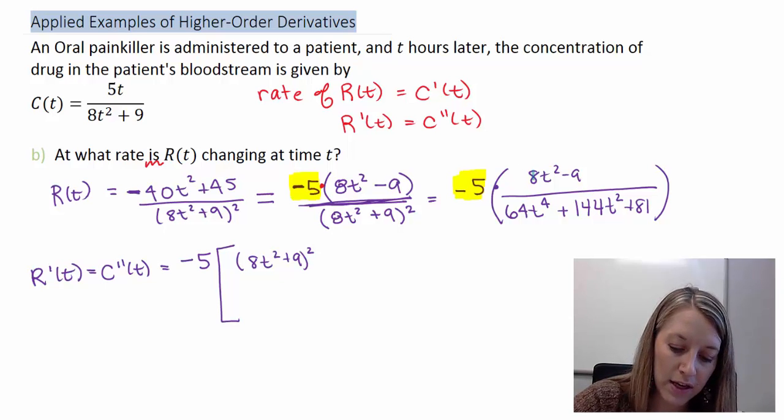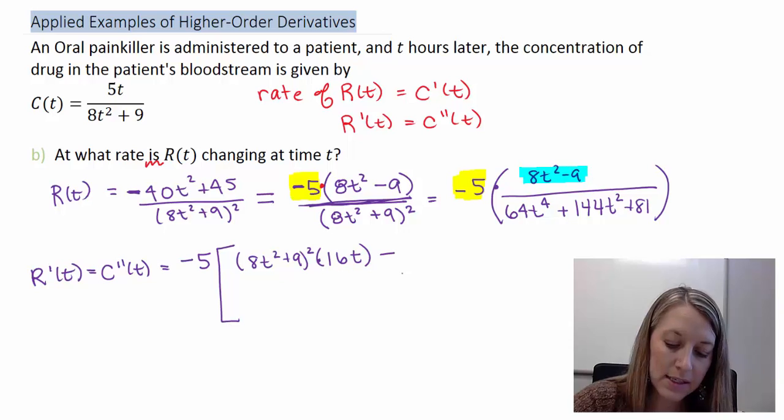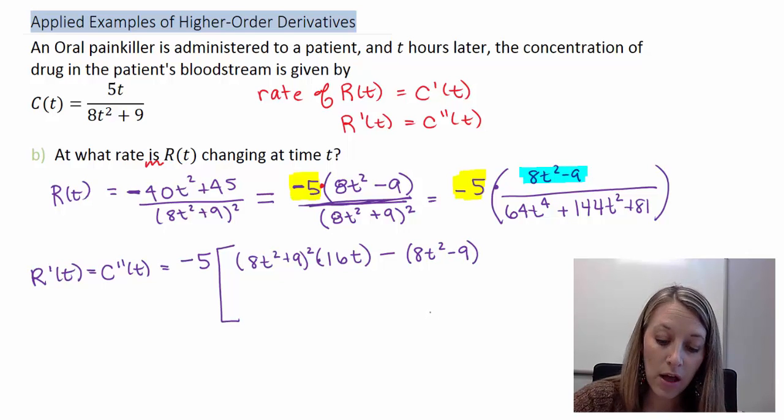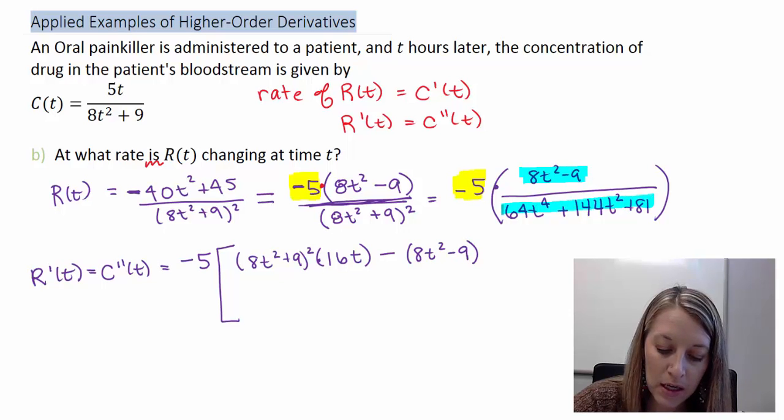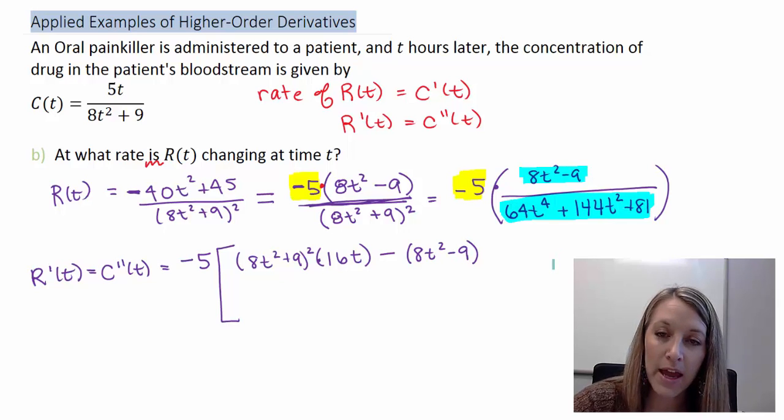So I'm going to take the derivative of this here, my expanded format. And so the derivative of that gives me a 16t minus high D low. So let me keep my high as is, 8t² - 9, D low. So the derivative of my low, and that's why I expanded this out, because at this time it's actually easier to take the derivative of my expanded format.